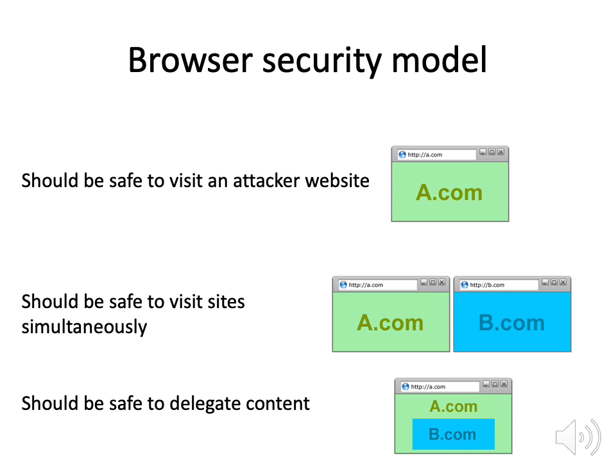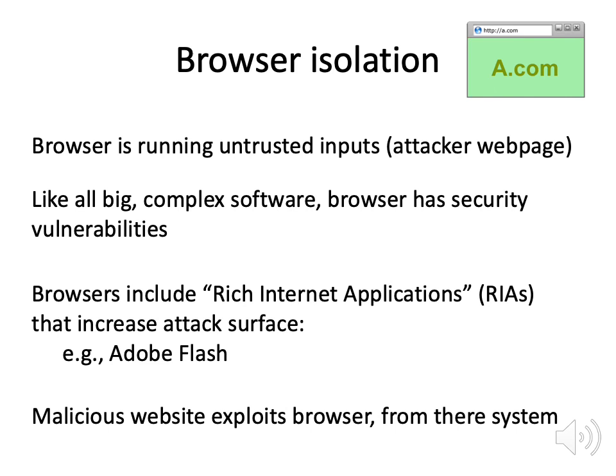If I visit google.com and facebook.com, Google shouldn't be able to spy on my interactions with Facebook — those two should be separated. Furthermore, if I have a web page and I embed a Google Calendar widget to show my schedule, that Google Calendar widget shouldn't be able to see everything else on my web page. We can think about this as a standard operating system isolation problem: a browser is running untrusted inputs and executing them, the same way your operating system might take programs from untrusted users and run them — but trying to protect other users from the damage. A browser has to do that with attacker web pages.